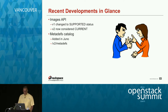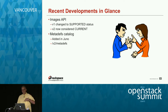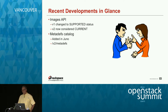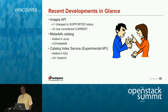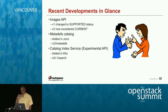Another recent development in Glance is the addition of the metadefs catalog — in Juno or Icehouse. What the metadefs catalog allows you to do is store metadata definitions that Glance and other services can use. It gives you an endpoint where you can define what type of metadata you want on your images, servers, or whatever takes metadata, and also specify enumerations of values they can have. In this cycle there's also an experimental API for the catalog index service at slash v0.1, exposing ElasticSearch for Glance images.